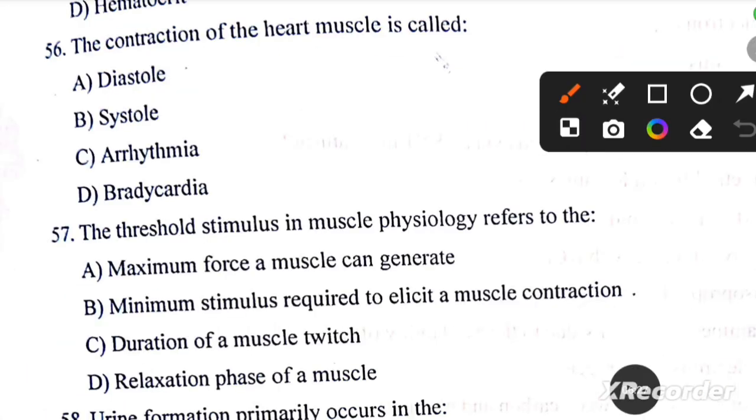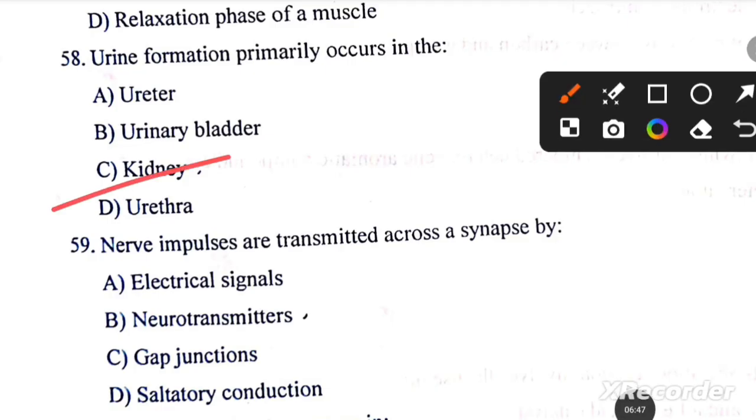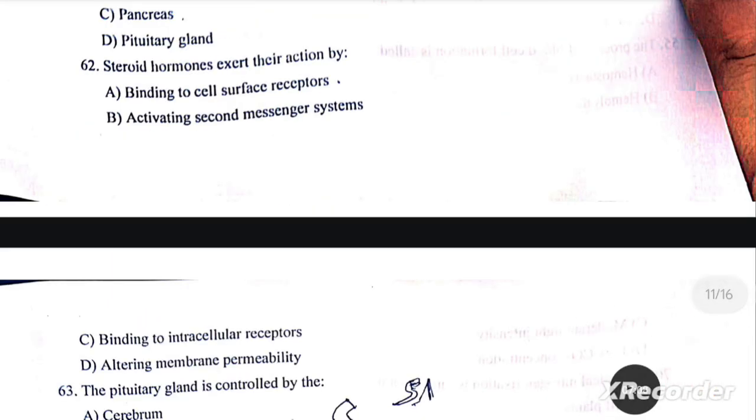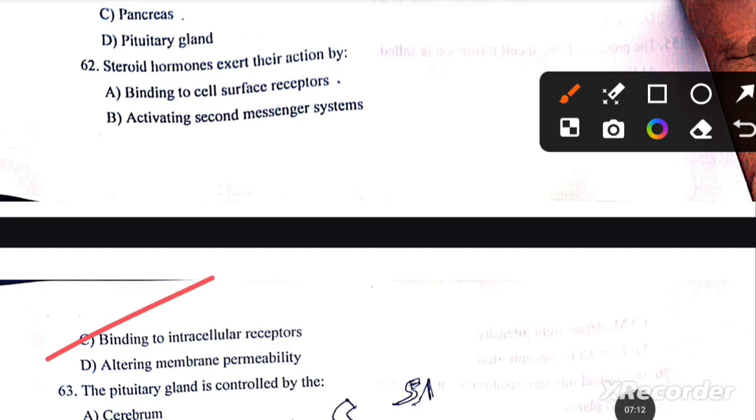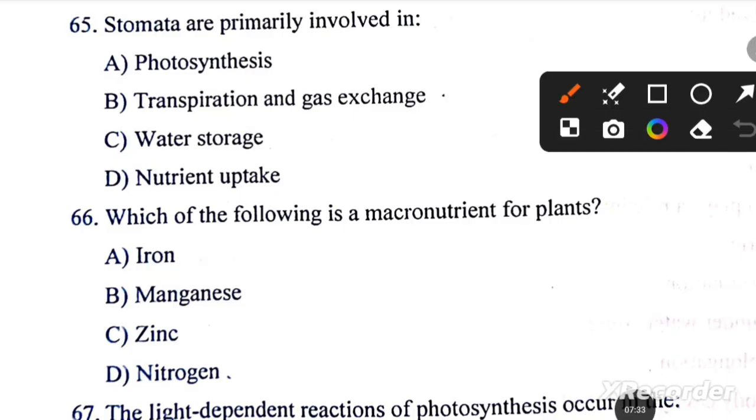Question number 56: the contraction of the heart muscle is called... the answer is option B. The threshold stimulus in muscle physiology refers to the minimum stimulus required to elicit a muscle contraction. Urine formation primarily occurs in the kidney. Nerve impulses are transmitted across a synapse by neurotransmitters. Next question, question number 60: saltatory conduction occurs in... the answer is option B. Next, insulin is secreted by the pancreas.